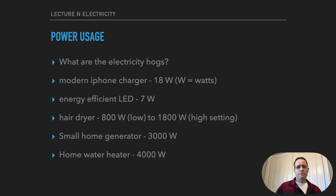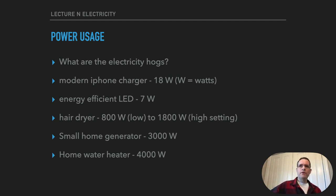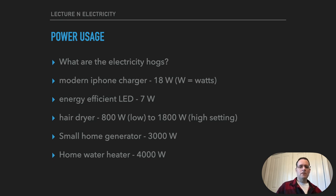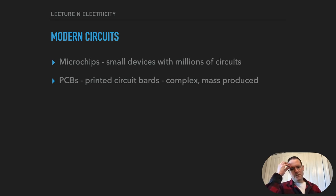Power usage is everywhere and there are different power ratings on devices in your house. A modern iPhone charger might be 18 watts; energy-efficient LEDs might be 7 watts. A hair dryer can be 800 to 1800 watts depending on the setting. A small home generator might be 3000 watts — enough to run a refrigerator and some lights, but not a home water heater, which runs at 4000 watts. Someone with a 3000-watt generator can keep the refrigerator going and some lights on, but still has to take a cold shower.